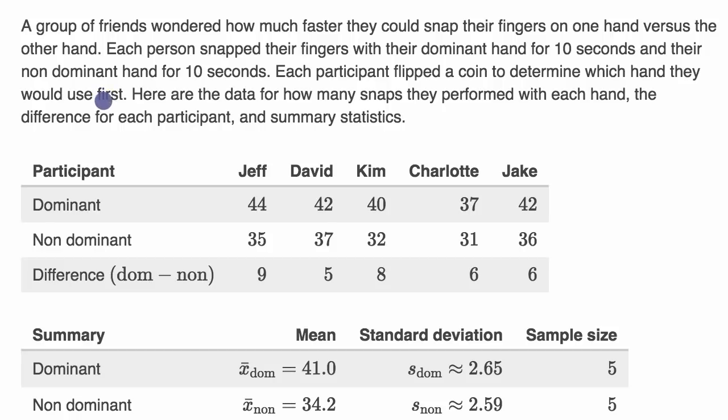Each participant flipped a coin to determine which hand they would use first. Because if you always used your dominant hand first, maybe you're tired by the time you're doing your non-dominant hand or there's something else. So here, it's random which one you use first. Here are the data for how many snaps they performed with each hand, the difference for each participant, and summary statistics.